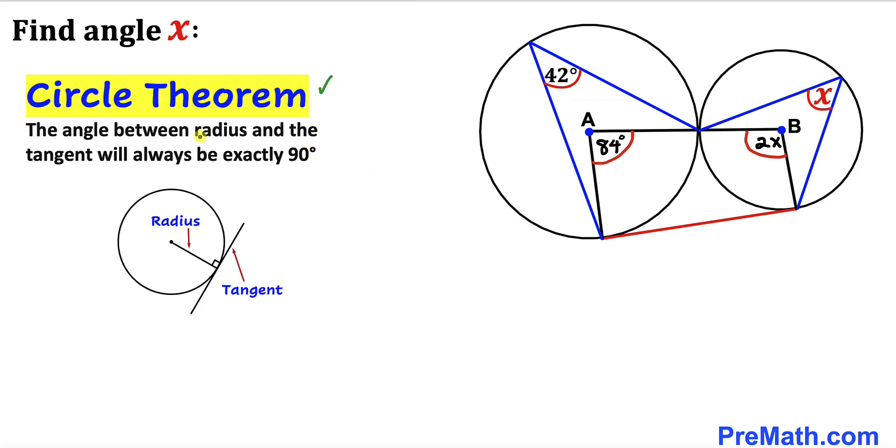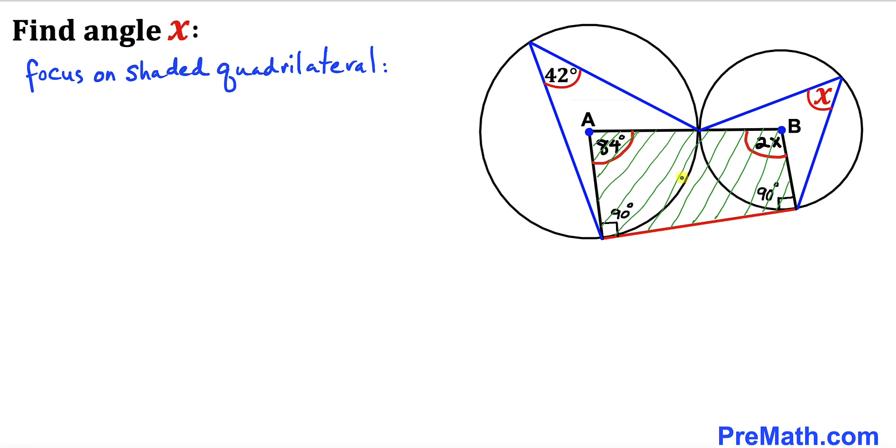The angle between the radius and the tangent is always 90 degrees. In our case, these are our two radii and this is our tangent line. Therefore, these angles are going to be 90 degrees each.